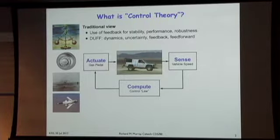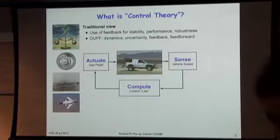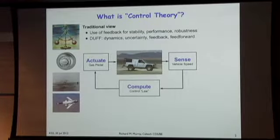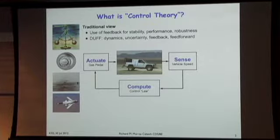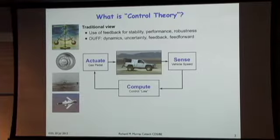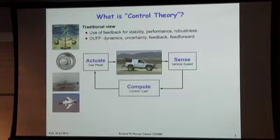The feedback control loop involves sensing, actuation, and computation in an interconnected cycle—that's where control theory started. I like to remind people to think about DUFF, like Duff beer from the Simpsons. The key things to keep in mind are dynamics, uncertainty, feedback, and feedforward. So another way of thinking about control theory is that it's the study of dynamics, uncertainty, feedback, and feedforward in complex systems.